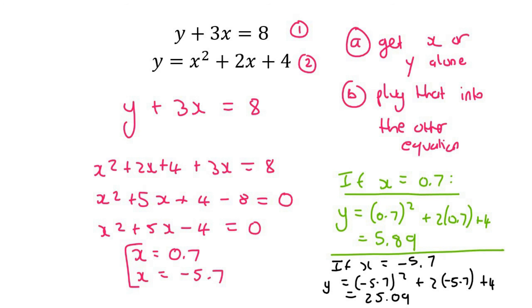So our final answers are going to look like this. When x is 0.7, then the y value for that one was 5.89. So we do like that.